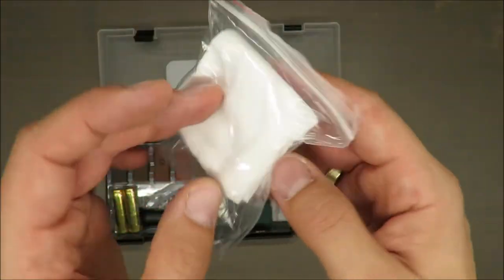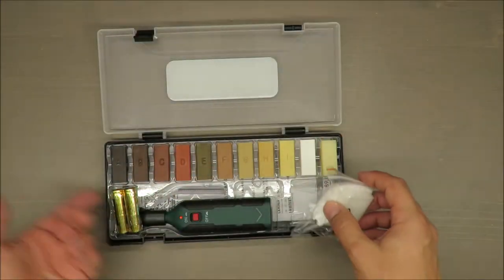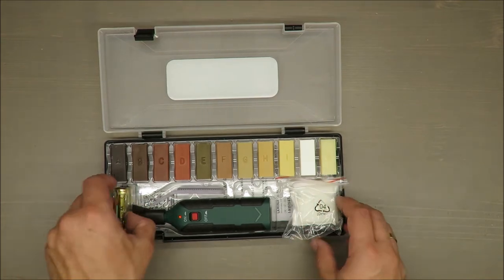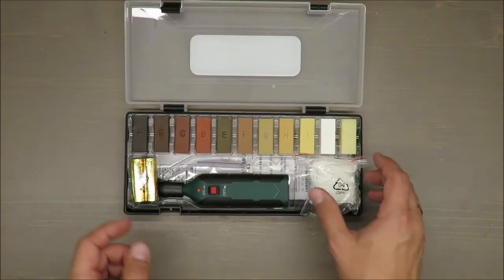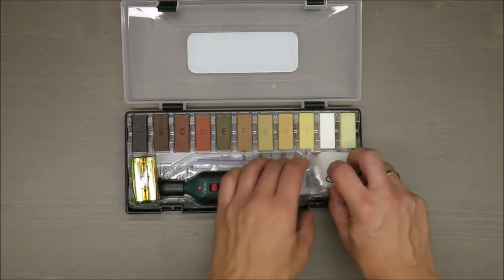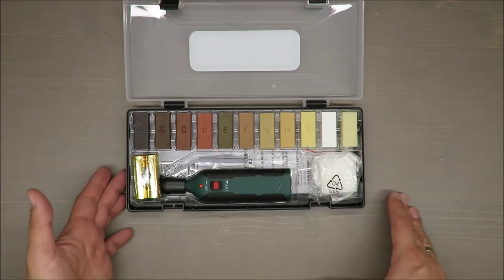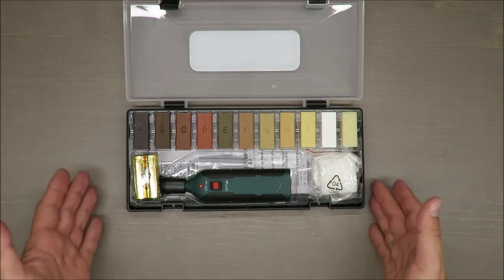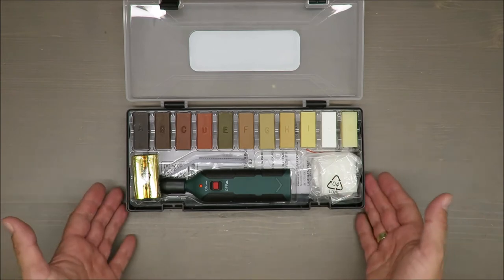Inside the kit you have a sponge, you have some fabric, and batteries. But my advice: use rechargeable ones because such regular ones are simply not efficient.